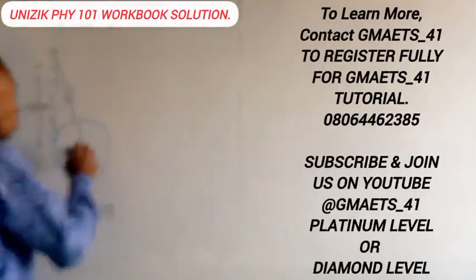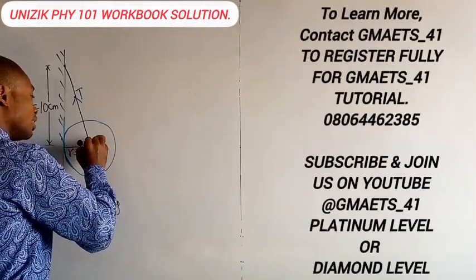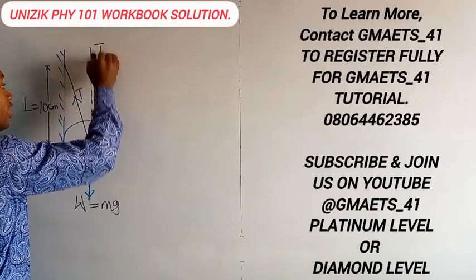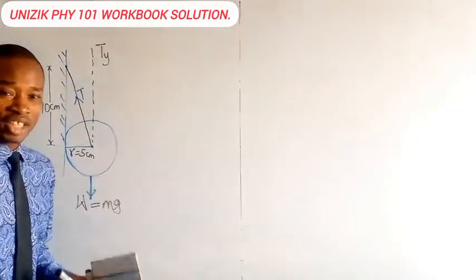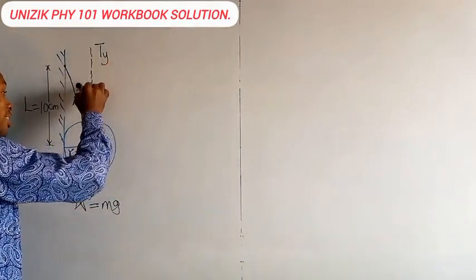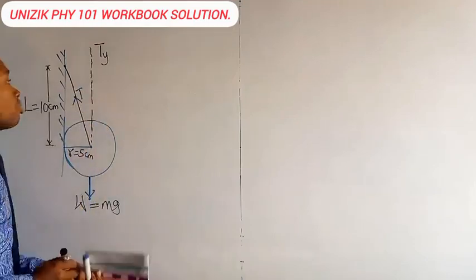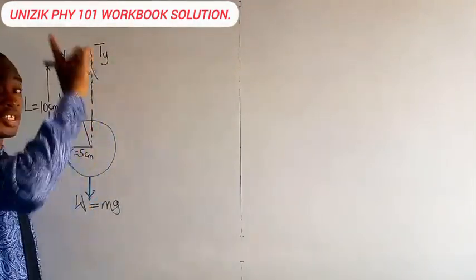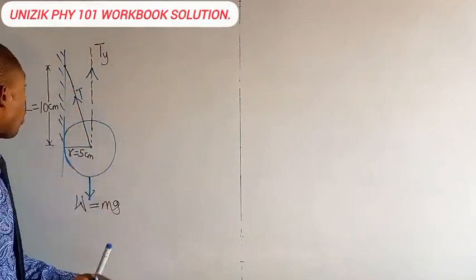It simply means that the vertical value of this tension will definitely balance the weight of the object. For that reason, let's assume that we have the vertical component of the tension. I'm going to call this TY. What does that mean? Tension acting in the vertical direction. This tension that is acting in that vertical direction must balance the weight of the object. So I'm going to use an arrowhead facing up, telling us that the tension is pulling upward.